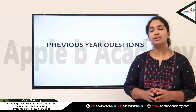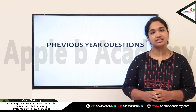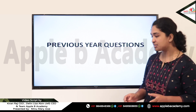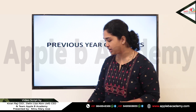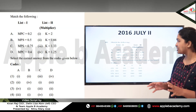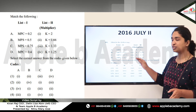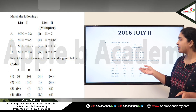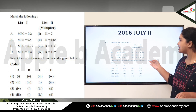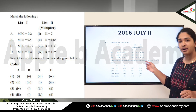In this video we will be discussing the previous year questions based on the multiplier and accelerator theories discussed in the previous videos. The first question is from 2016 July Paper 2. It is a match-the-following question where different values of MPS and MPC are given, and in List 2 the values of the multiplier are given.